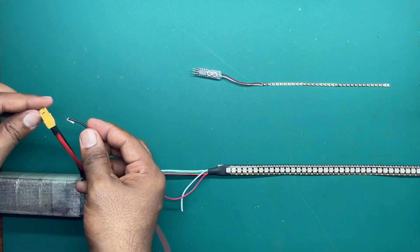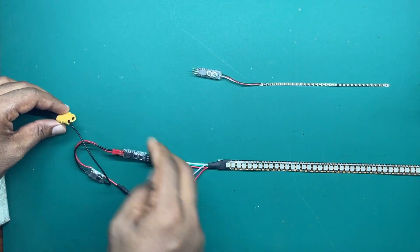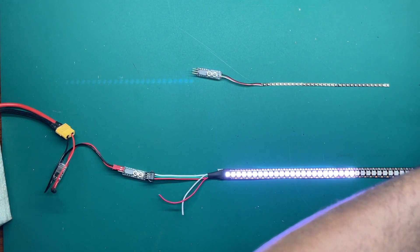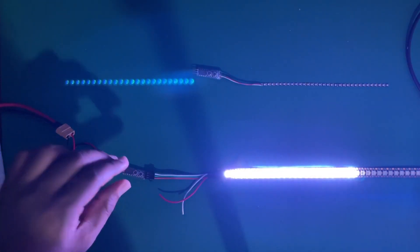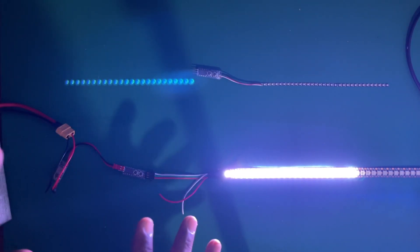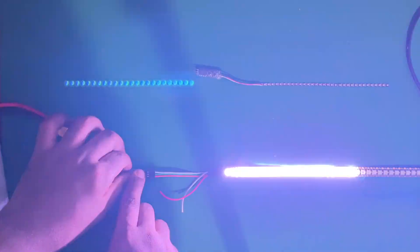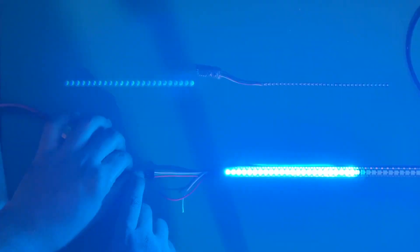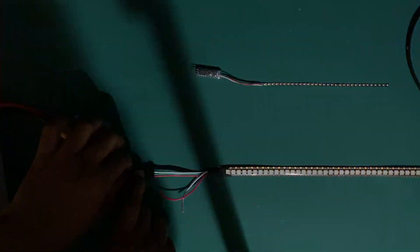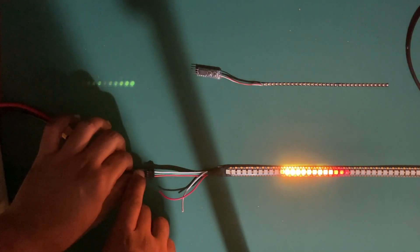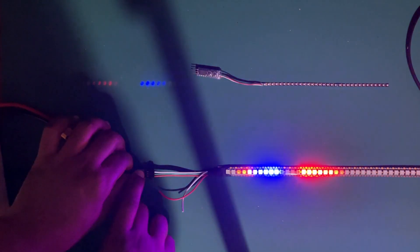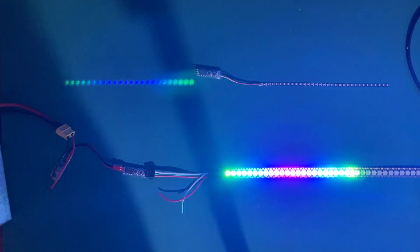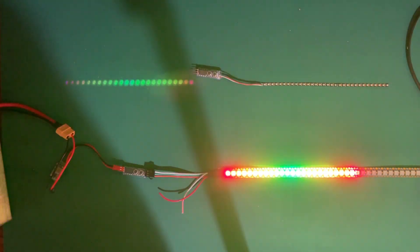So now we are not using any remote control or anything, we are just using a five volt power supply and then you can change the patterns with the push buttons. Same pattern, same everything. We are just not using the remote controller, we are using physical buttons only.